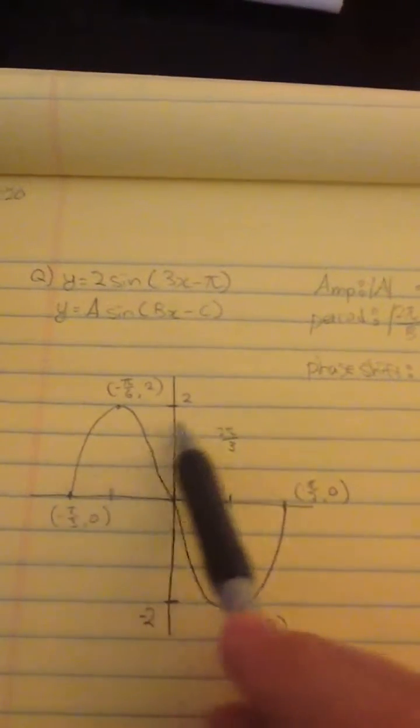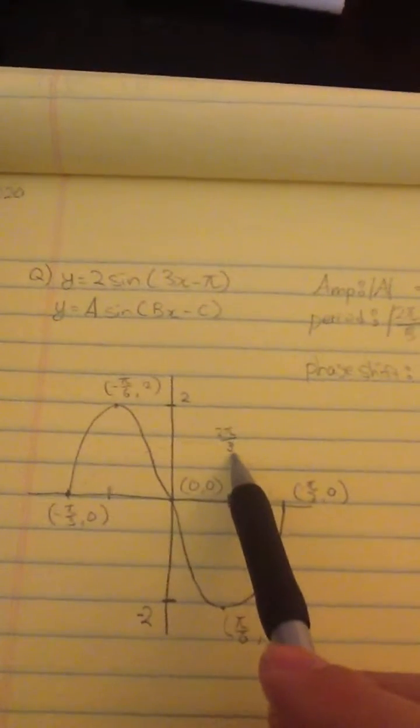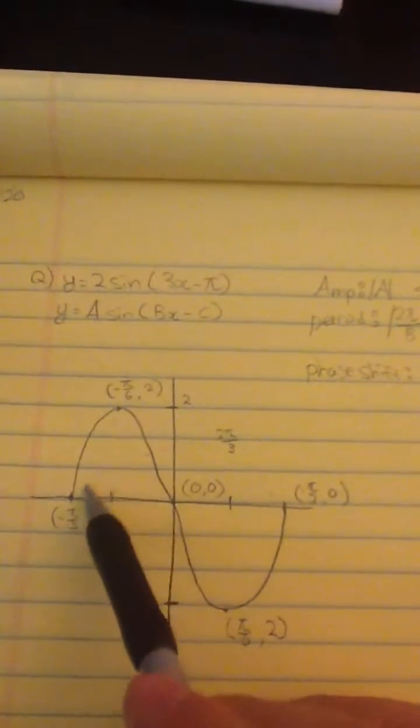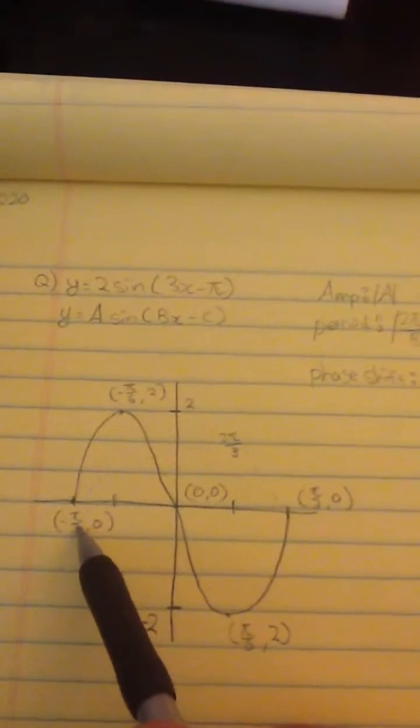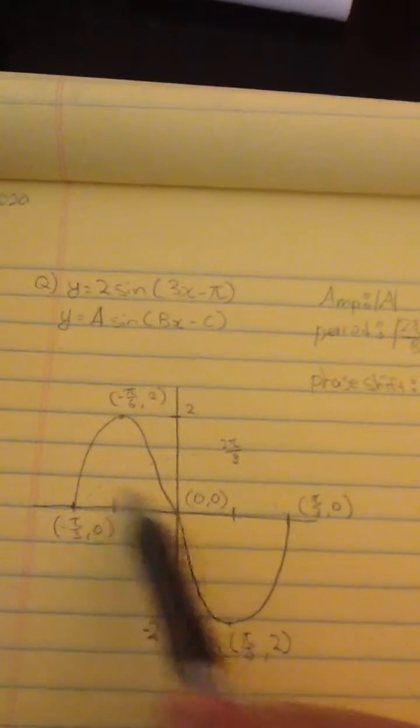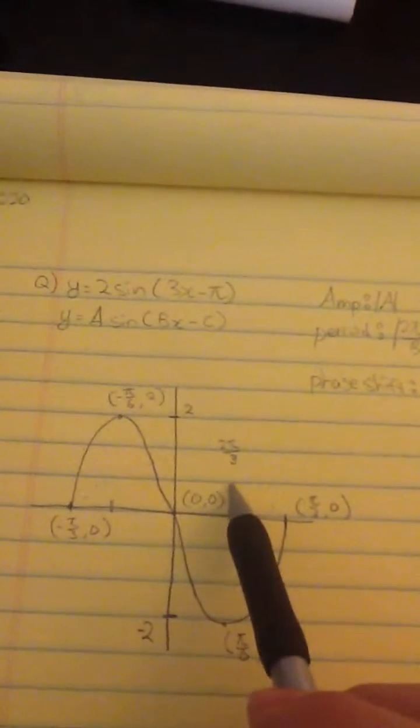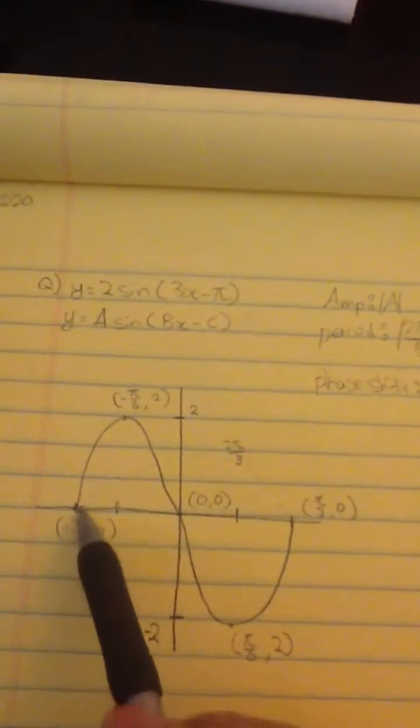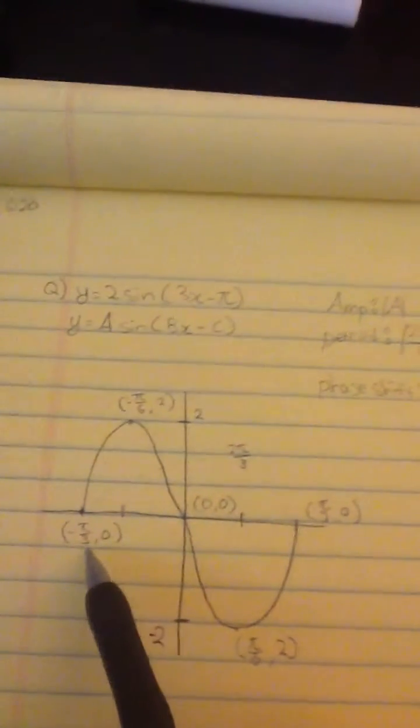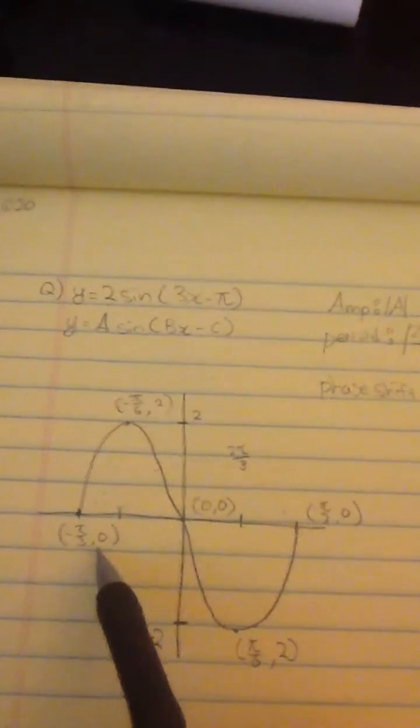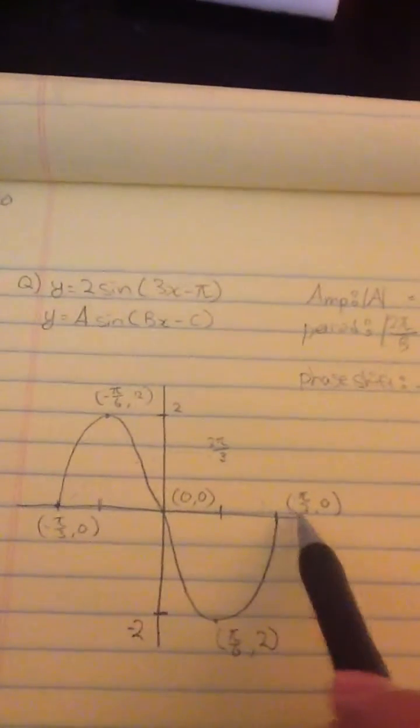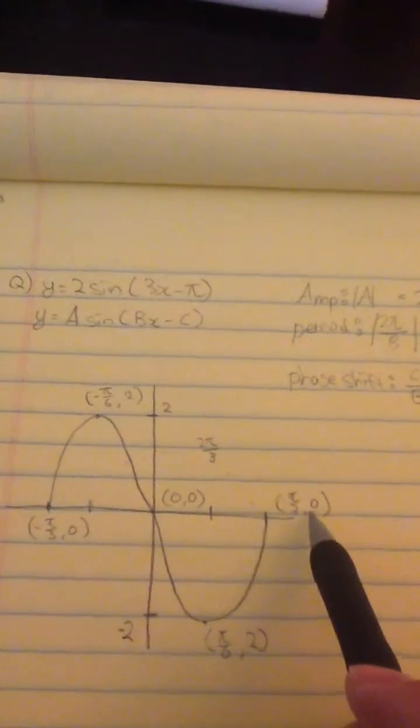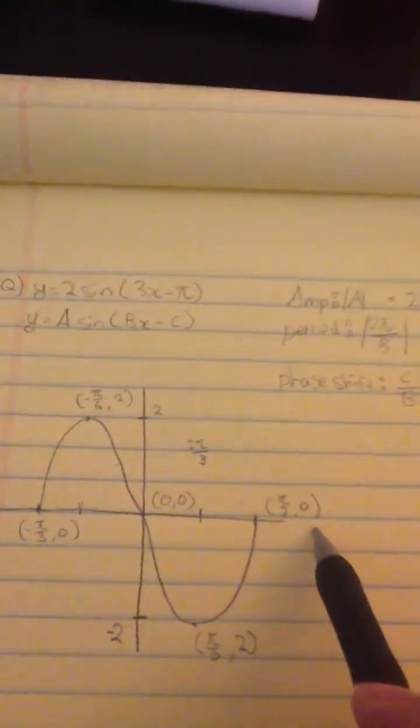Since the period of this one cycle is 2π over 3, I know it should be negative π over 3. Since we have two kind of circles, I just divide by two, which makes x equal to negative π over 3, and of course y is zero here. And also this point is π over 3 as x and zero as y.